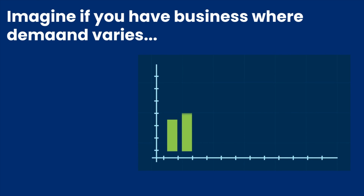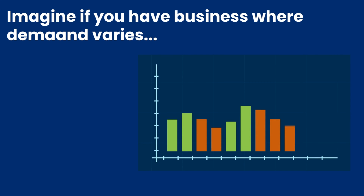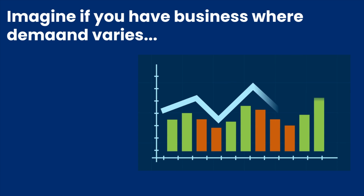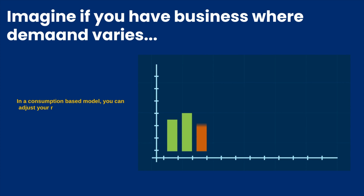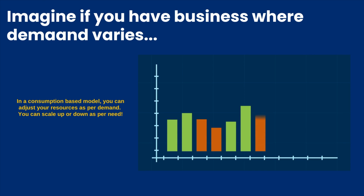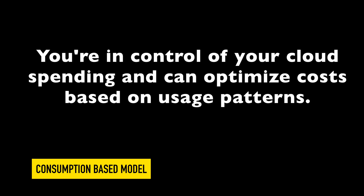Imagine you have a small business with fluctuating demands — sometimes going up, sometimes going down. In a consumption-based model, you can easily adjust your cloud resources as your needs change. During busy periods, you can scale up to meet increased demand, and during slower periods you can scale down to save costs. With a consumption-based model, you are in control of your cloud spending and can optimize costs based on your usage patterns.